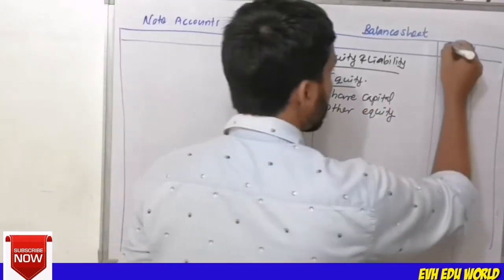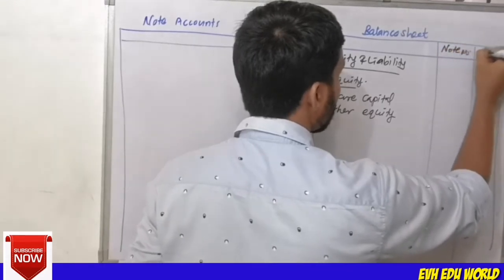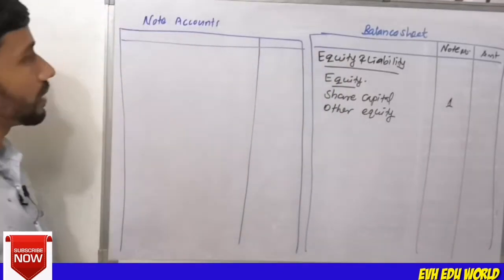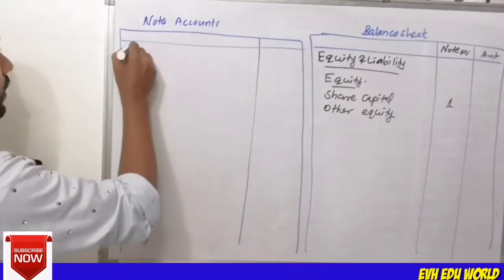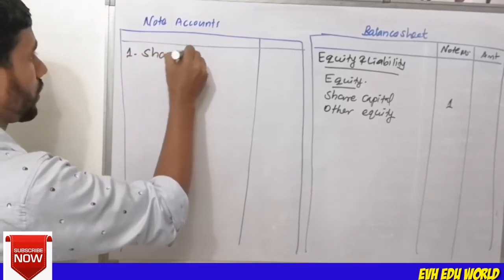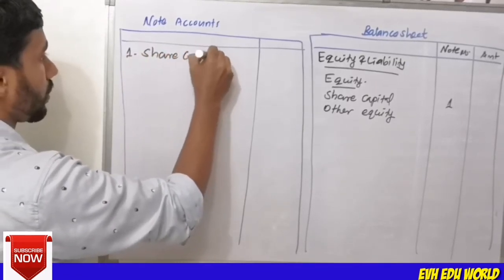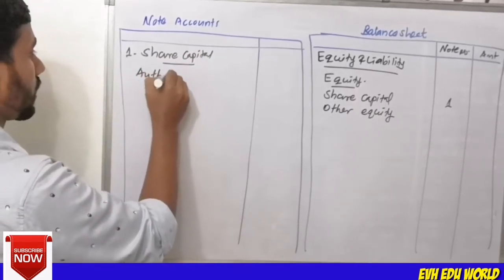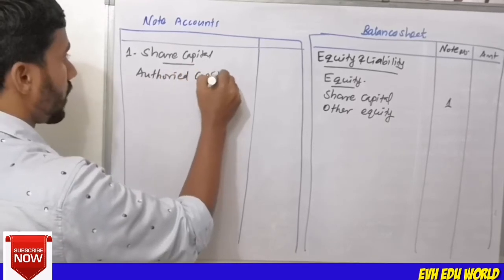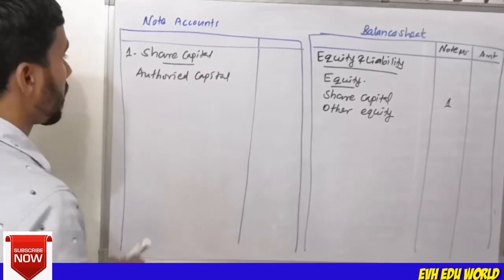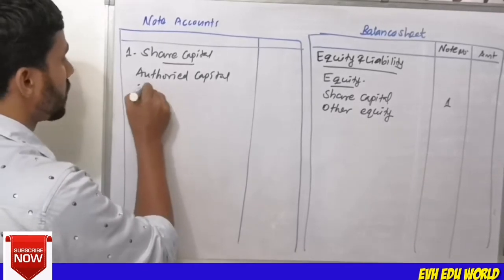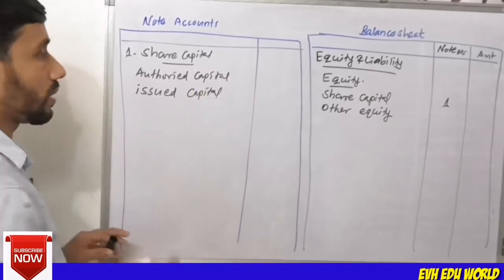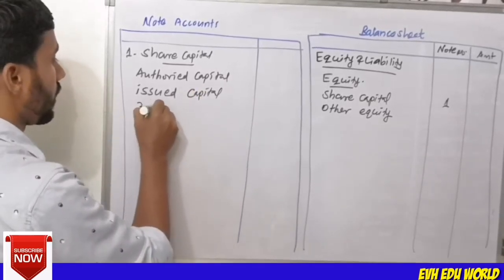We use note numbers for each item. Note number 1 is Share Capital. We will prepare each note. First is authorized capital — if not given in the question, authorized capital is not specified. Then issued capital: issued capital is Rs.3,00,000 for 3 lakh shares at Rs.10 each.